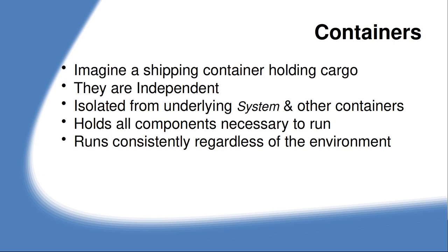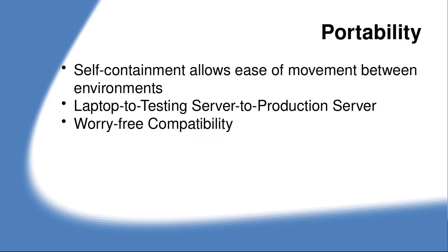Imagine a shipping container on a cargo vessel — that's basically what Docker containers are like. They're independent of one another, isolated from the underlying system and other containers. They hold all the components necessary to run, and they run consistently regardless of the environment. Self-containment allows ease of movement between environments — laptop to testing server to production server — with worry-free compatibility because of containerization and sandboxing.